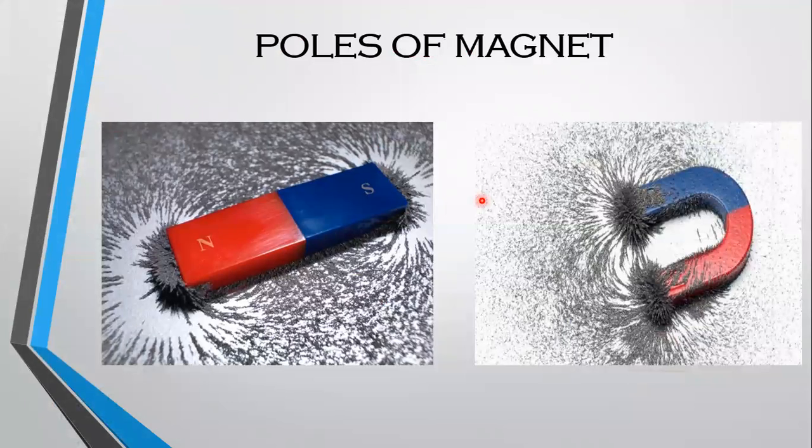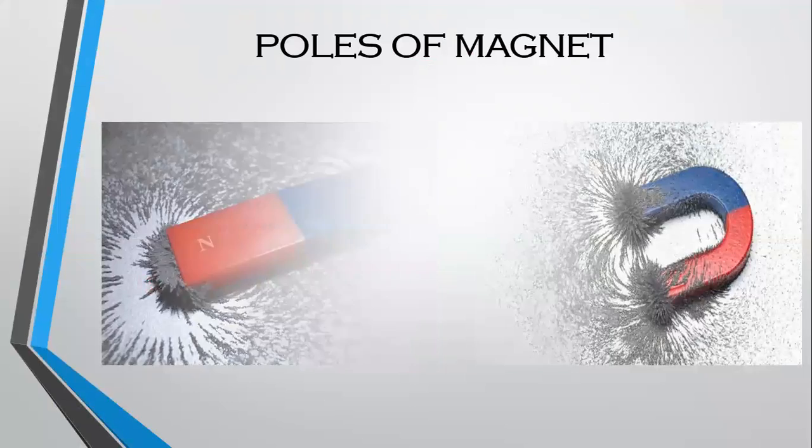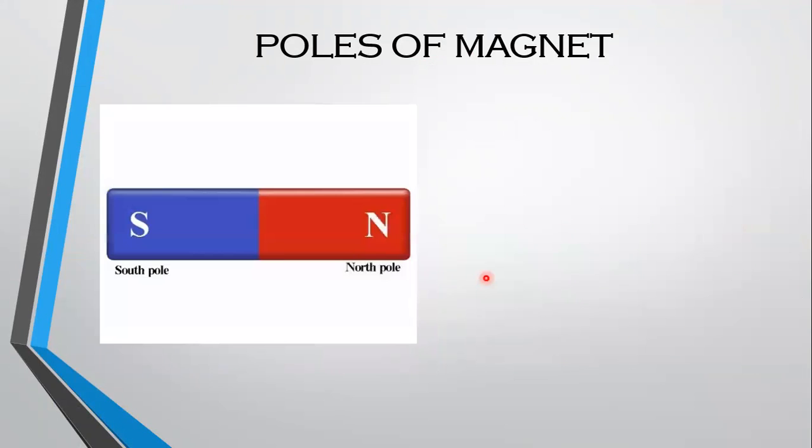When a magnet is moved amongst iron fillings, what does it show you? It is found that more iron fillings are attracted towards the region close to the ends of the magnet. The regions of a magnet where the magnetic force is strongest are called the poles of the magnet. Every magnet has two poles, North Pole and South Pole respectively.